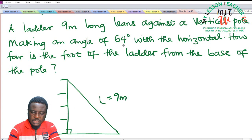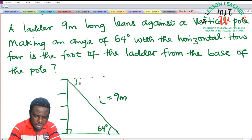Making an angle of 64 degrees with the horizontal. This is the angle, 64 degrees with the horizontal. This is the horizontal, or you can equally mark this as 64 degrees on either side.